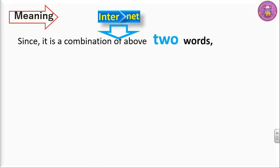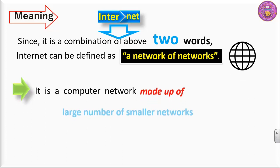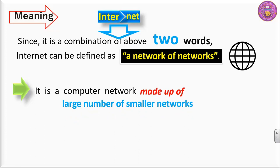Since it is a combination of two words, internet can be defined as a network of networks. It is a computer network made up of large number of smaller networks using different networking protocols. Protocols means set of rules. While computers communicate with each other they follow a set of rules, those rules are termed as networking protocols.